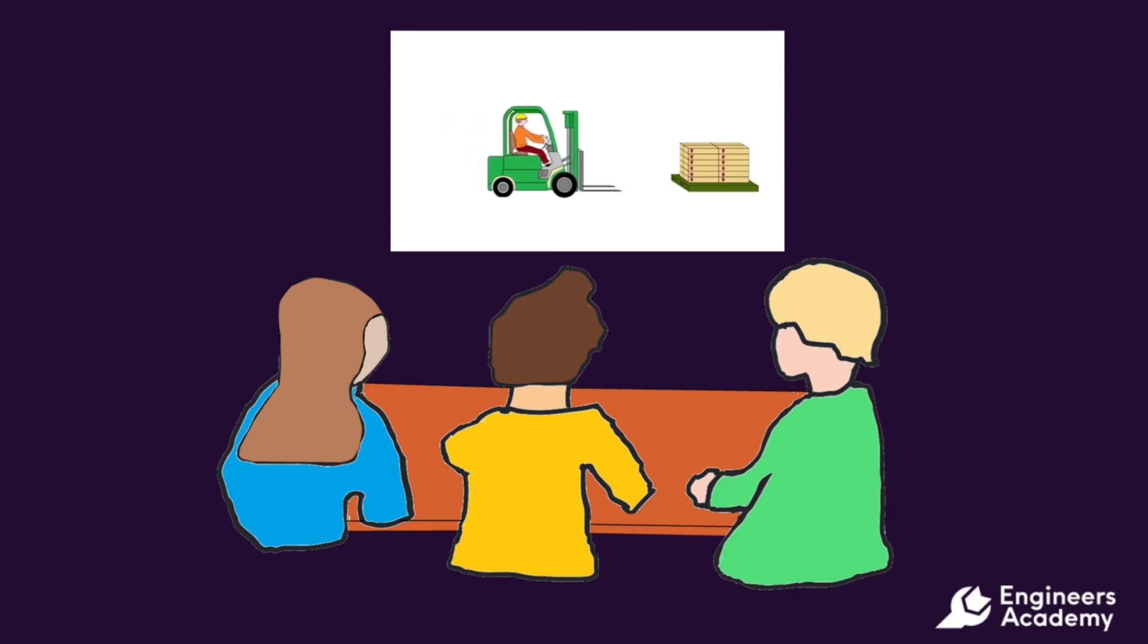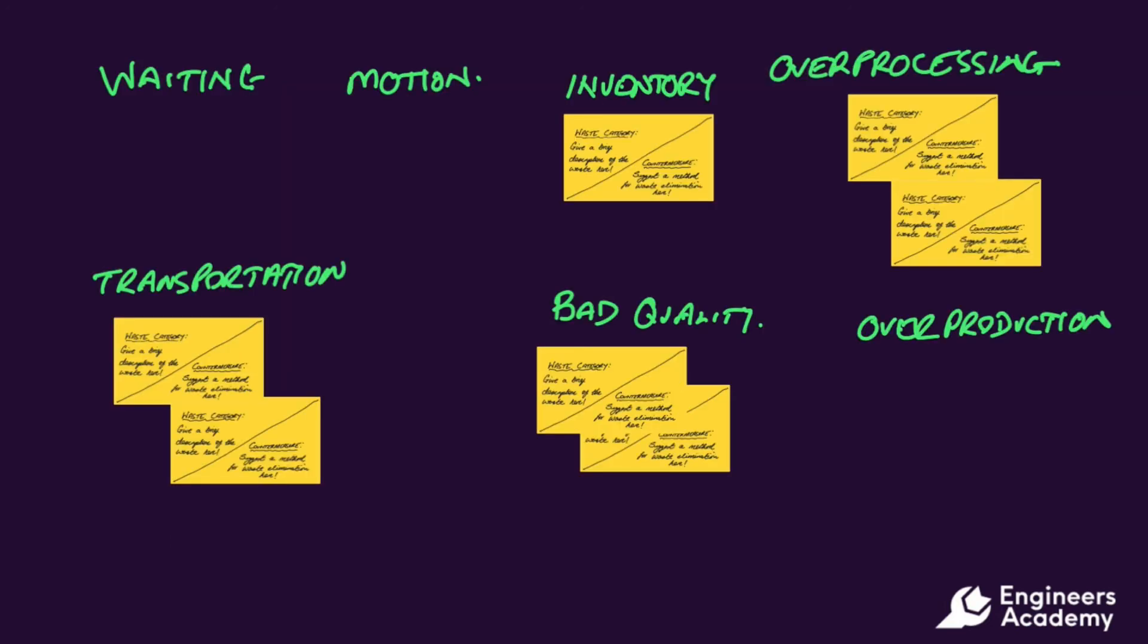Sticky notes are used to record each observed waste, one note per waste. The sticky notes are placed onto a chart. The chart is then used to prioritize the waste for order of elimination.